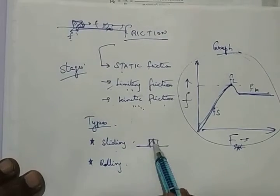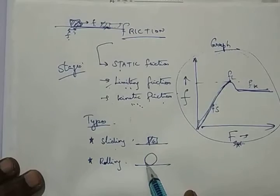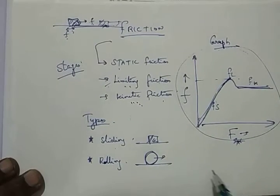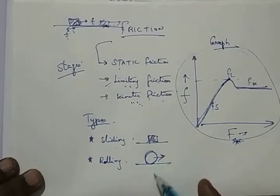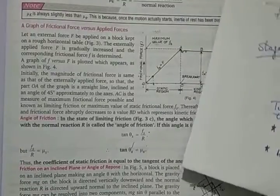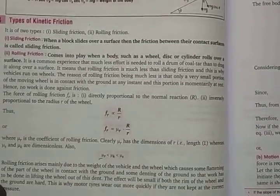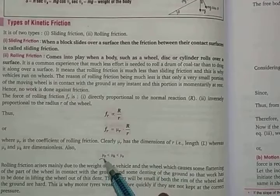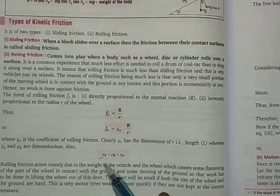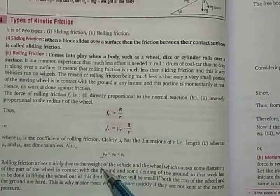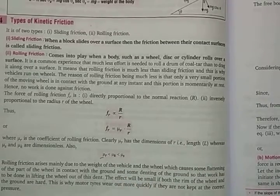Sliding friction means when a body slides over another. Rolling friction means when a body is rolling — just rolling one on top of another. Please learn sliding friction and rolling friction, how rolling friction happens, and how they are related to each other, including the coefficient of friction and everything.